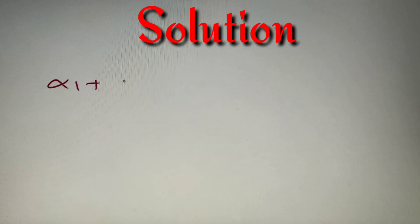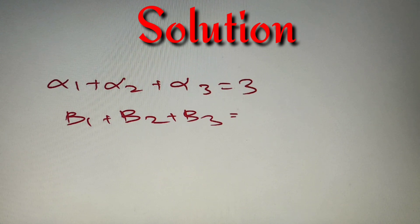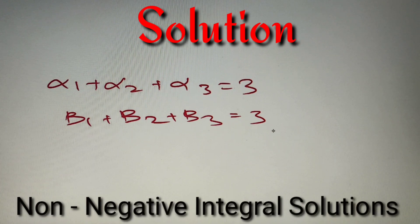We have got that α₁ + α₂ + α₃ = 3 and β₁ + β₂ + β₃ = 3. Now we have to decide whether we'll take the positive integral solution or the non-negative integral solution. Since all six values can take values from 0 to 3, we'll take the non-negative integral solution.